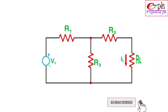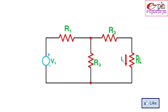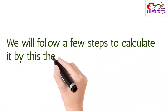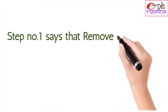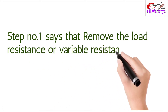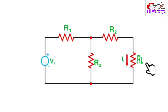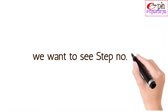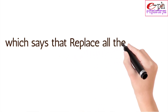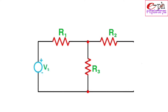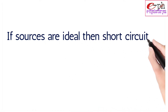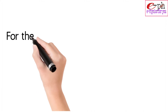Now we want to calculate how much current is flowing through this resistance and how much voltage is dropping across it. We will follow a few steps. Step 1: Remove the load resistance (the variable resistance) from the given circuit. After removing it, we get a modified circuit. Step 2: Replace all the sources by their internal resistance. In this circuit we will replace the voltage source by its internal resistance.